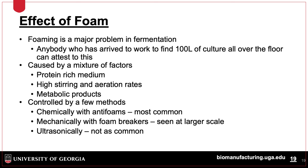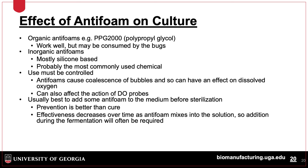Foaming can be a major problem in fermentation. It is caused by protein-rich media, high stirring or aeration rates, and metabolic products. It is typically controlled using a chemical antifoam, but can also be controlled mechanically and, to a lesser extent, by ultrasonication. Antifoams such as PPG-2000 work to break up foam, but can be consumed by microbes or cause decreased growth. Most antifoams are silicone-based chemicals that can cause coalescence of bubbles and affect oxygen sensors. Antifoam is usually added before fermentation.